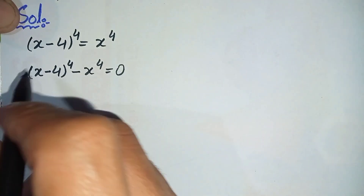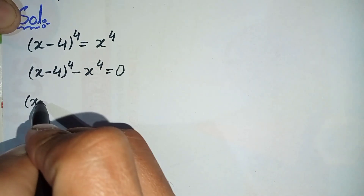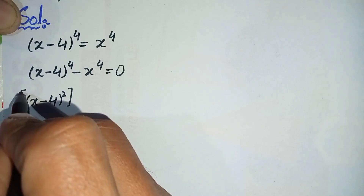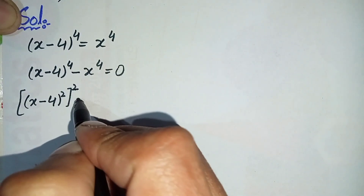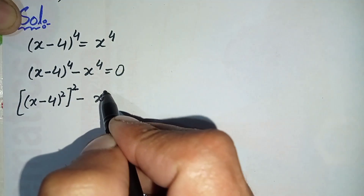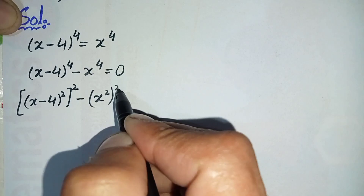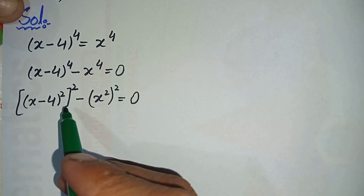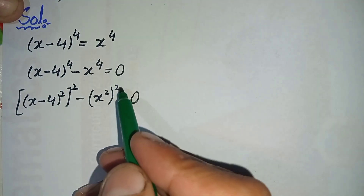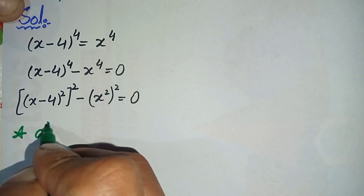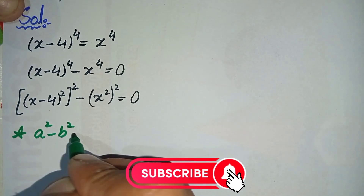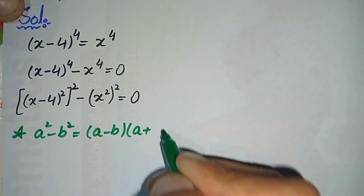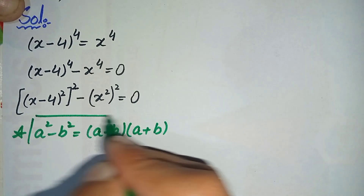Now we can write the powers of these terms as: (x minus 4) whole raised to power 2, whole squared, minus x raised to power 2, whole raised to power 2, is equal to zero. Here we will use the famous algebraic identity: a squared minus b squared.